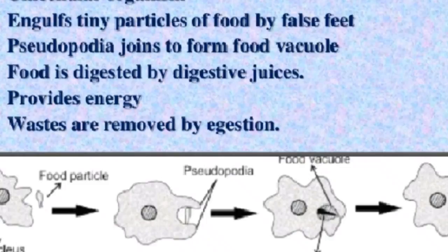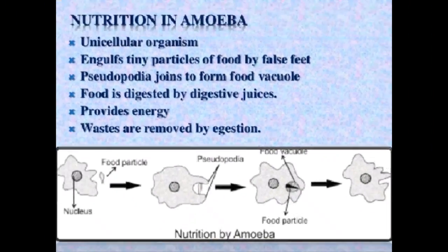This part of amoeba is a finger-like projection called pseudopodia. Pseudopodia pulls the food towards itself, and forms a food vacuole — it covers the entire food. That food vacuole is called a food vacuole, and all the food inside is digested by digestive juices, which also provide energy. Whatever waste remains is expelled through the ejection process.